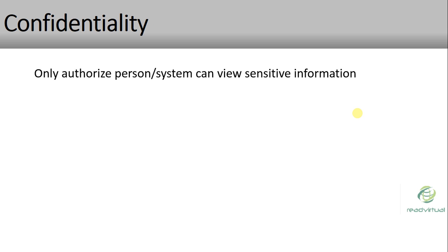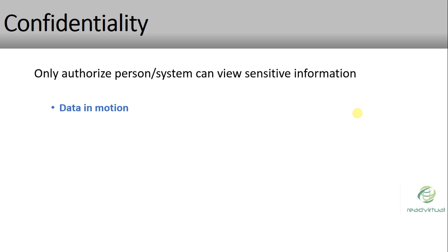The first concept is confidentiality — only an authorized person or system can view sensitive information. We have two types of data in our network or organization. The first type is data in motion, which means data that is currently traveling across the network.